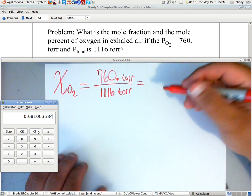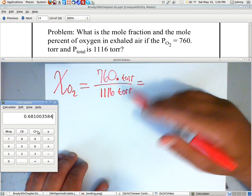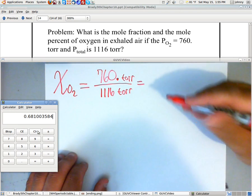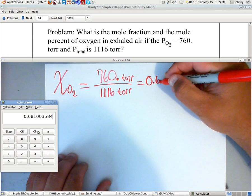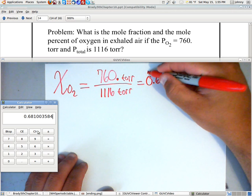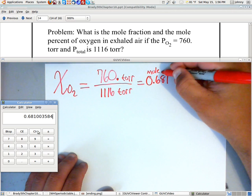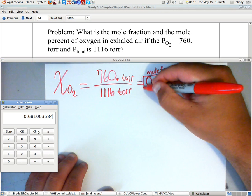Now, we need three sig figs because that's what they tried to make. They're being cheap there. But anyway, three sig figs would be 0.681. Now, this is our mole fraction for our answer.